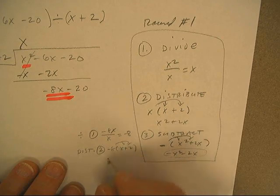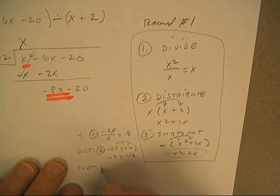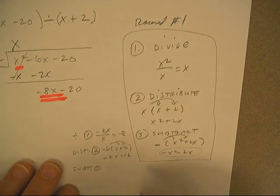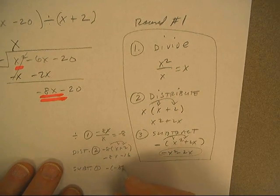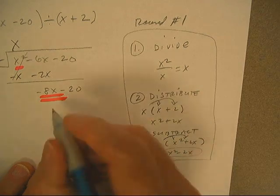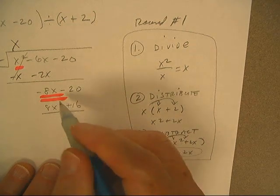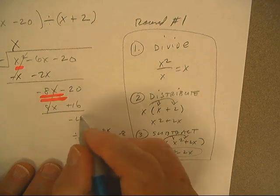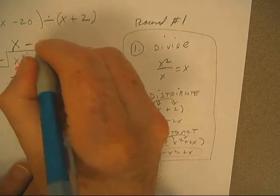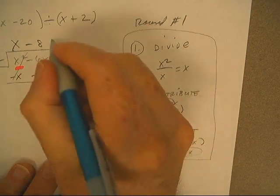The third step is subtract: negative of negative 8x minus 16. Distribute the negative: 8x plus 16, and then come right under here. Those eliminate and my remainder is negative 4. I need my negative 8 up here, so my remainder is 4.